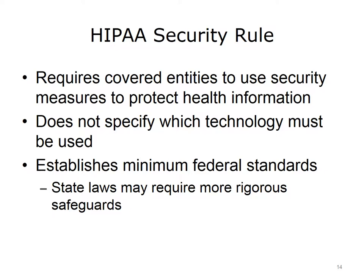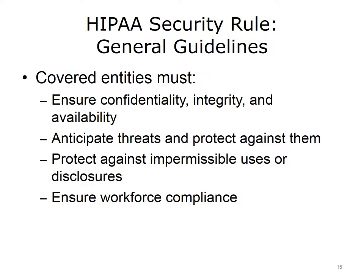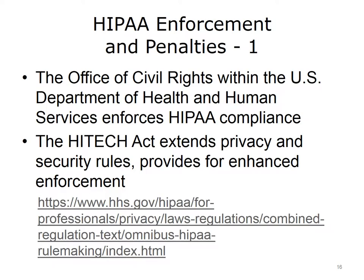The U.S. Department of Health and Human Services has published a summary of the HIPAA Security Rule with general guidelines: to ensure the confidentiality, integrity, and availability of all protected health information that covered entities create, receive, maintain, or transmit; to anticipate threats to the security and integrity of the information and protect against them; to protect against impermissible uses or disclosures of protected information; and to ensure employee compliance with HIPAA regulations. Compliance with HIPAA is enforced by the Office of Civil Rights of the U.S. Department of Health and Human Services. Failure to comply can result in substantial civil fines and criminal penalties.